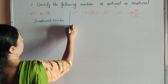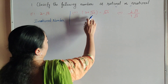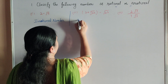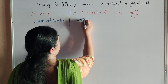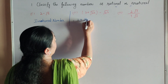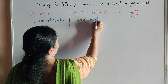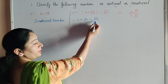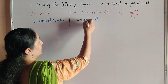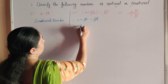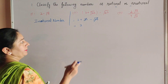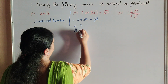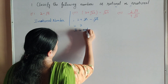Now we move to the second part: 3 plus square root 23 minus square root 23. Here plus square root 23 and minus square root 23 both are cancelled. So it is equal to 3, and we know 3 is a rational number, so it is a rational number.